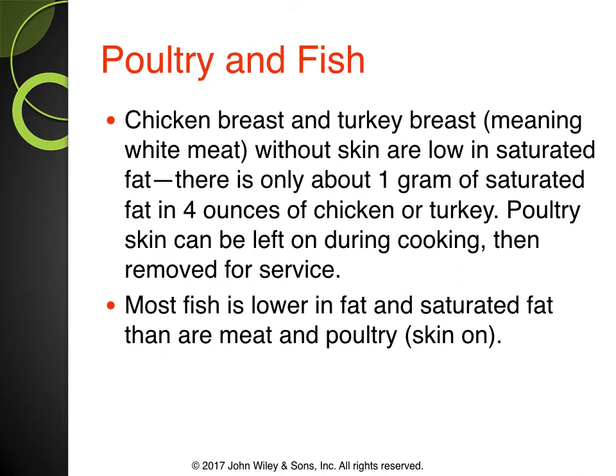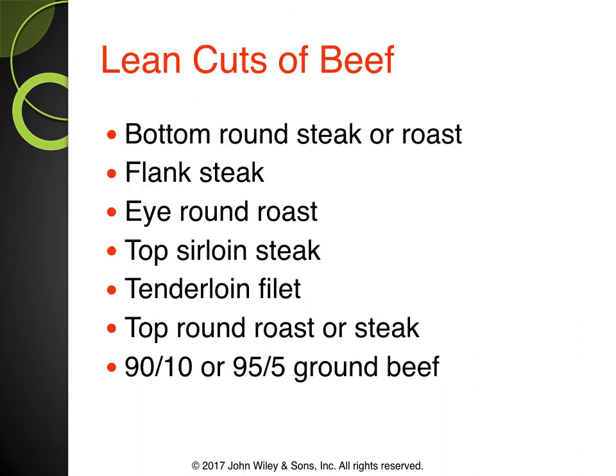Chicken breasts and turkey breasts — white meat without the skin — are low in saturated fat. There's only about one gram of saturated fat in four ounces of chicken or turkey. If you love meat and wonder what to eat, these are good healthy alternatives. Most fish are also low in fat and saturated fat as long as they don't have the skin on.